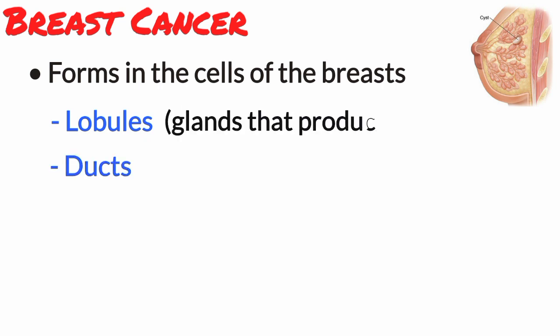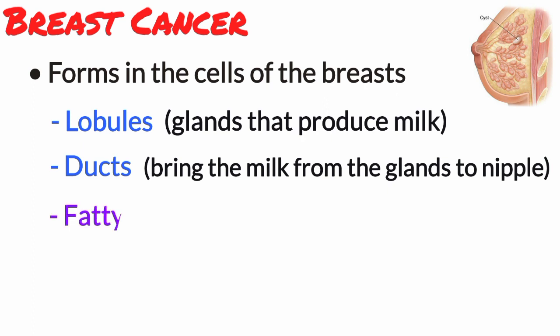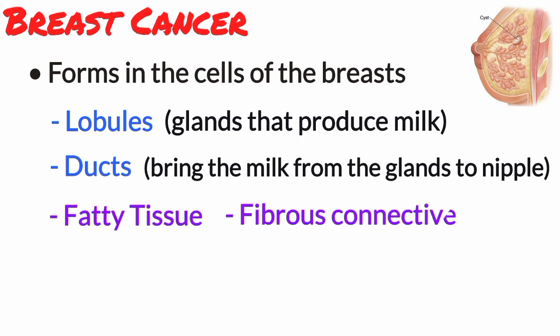Lobules are the glands that produce milk, and ducts are the pathways that bring the milk from the glands to the nipple. Cancer can also occur in the fatty tissue or the fibrous connective tissue within your breast.